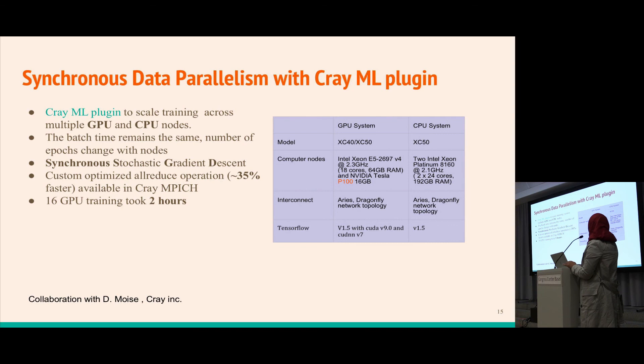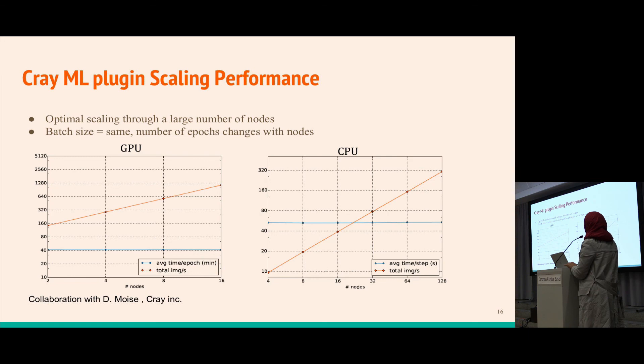From these results we see almost linear scaling of the number of nodes using GPU and CPU, and the average time per epoch remains almost constant. This means the overhead for communication is not much.